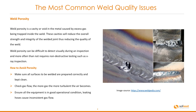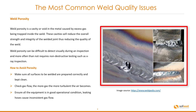To avoid porosity, you need to make sure that all surfaces to be welded are prepared correctly and kept clean. Check the gas flow — the more gas, the more turbulent the air becomes. Ensure all the equipment is in good operational condition, as leaking hoses can cause inconsistent gas flow. Here we have a typical weld porosity sample.